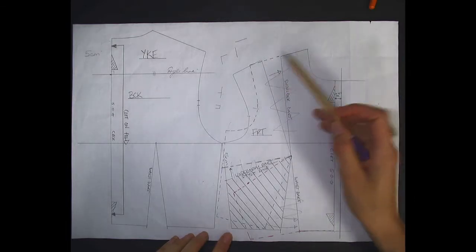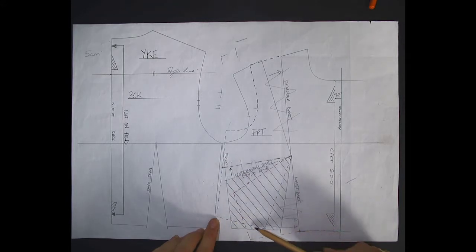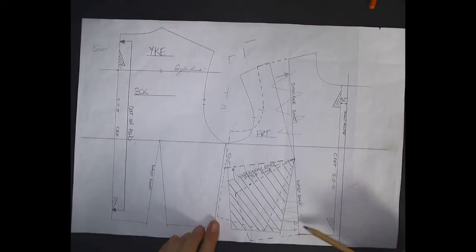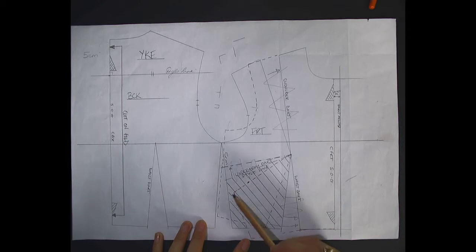here that this is my shoulder, my armhole, and then if you come down the blue line to the waist, this is my waist dart. If you look at the red line, you can see that the waist dart has been closed, the side seam, and then here this is my underarm dart.